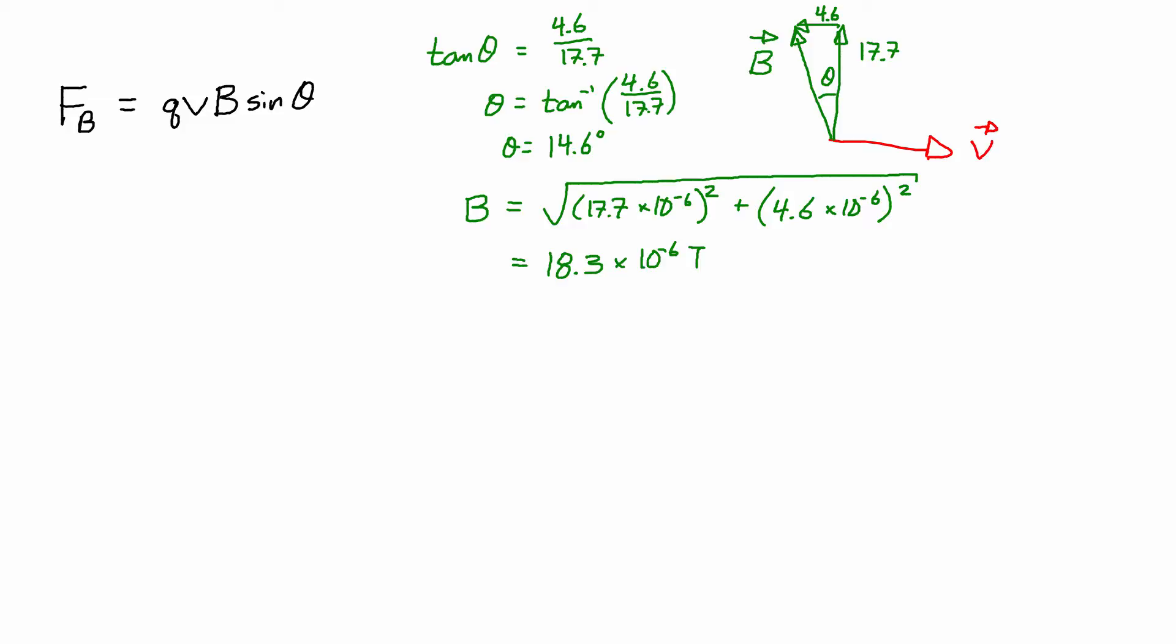So when we're using this equation, and remember we're starting by finding the magnitude, we actually can consider the magnitude first and then we'll look at the direction separately. So when we're using this equation we need to substitute in: we have our 50 microcoulombs for the charge, the velocity was given as 350 meters per second, the magnetic field is 18.3 microteslas, and then we just need to consider the angle between v and B and it's really tempting...